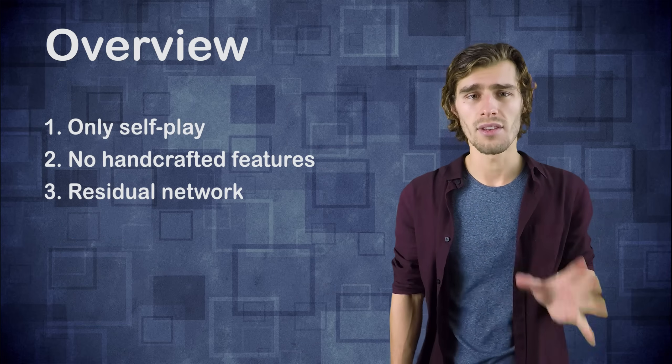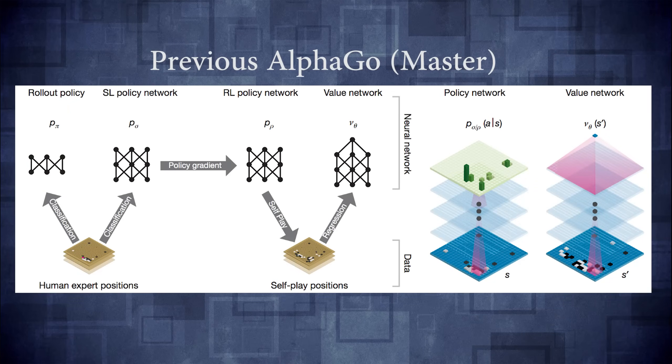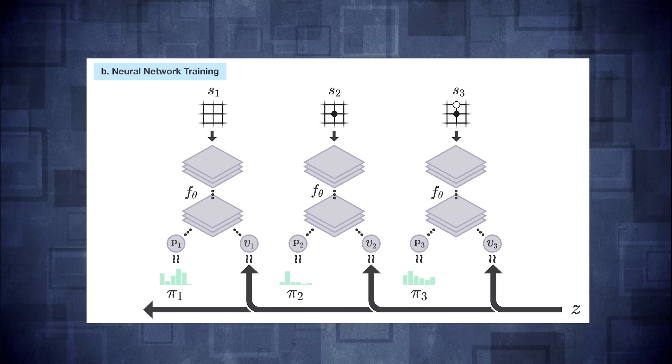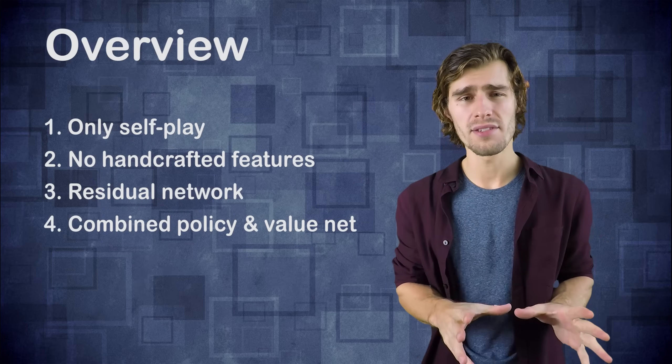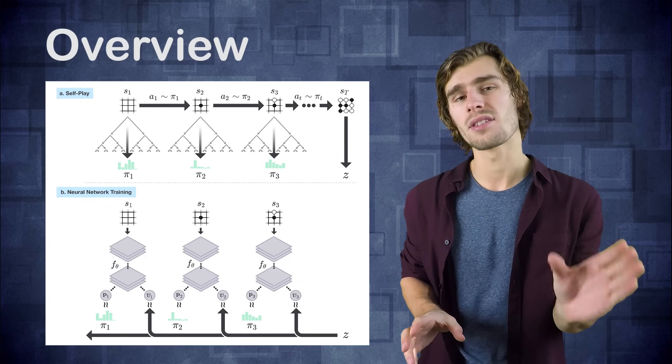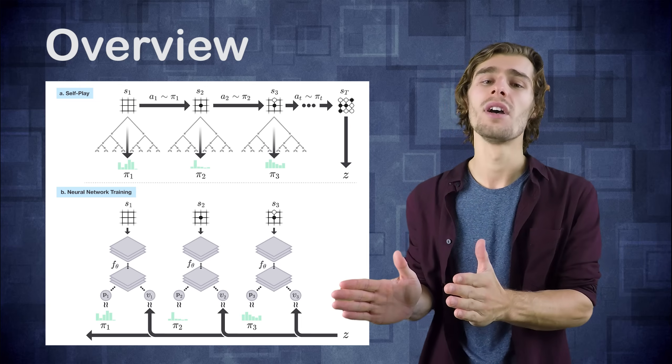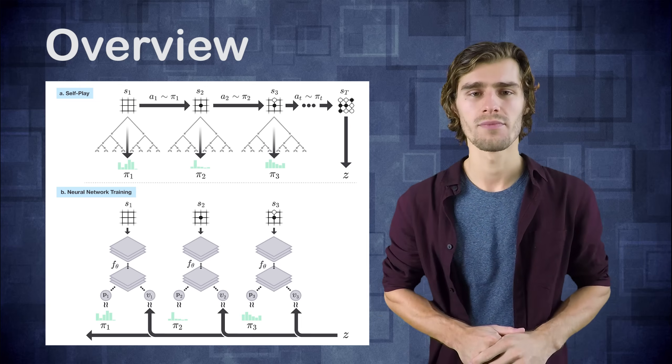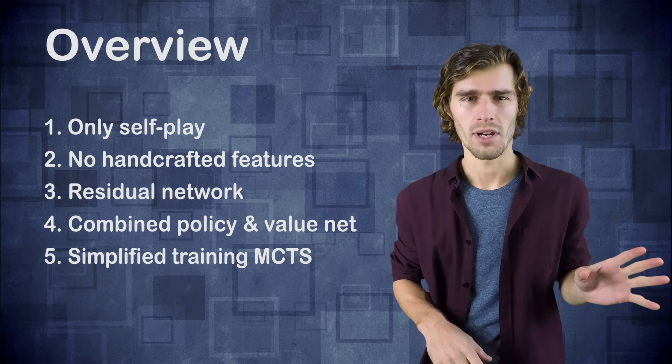Another major tweak to the network is that instead of having a separate policy and a value representation network, the two are now combined into a single large network that does both of these things. And then finally, they replaced the Monte Carlo rollouts with a simpler tree search approach that uses this single network to both do value prediction and to come up with very strong moves. So let's go over all of those tweaks one by one.